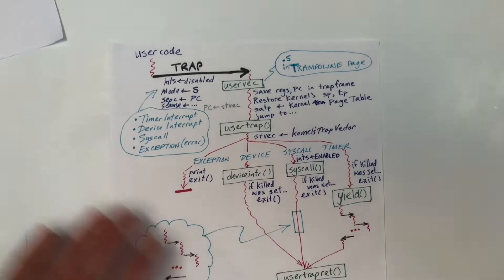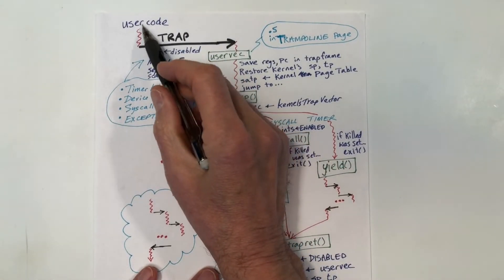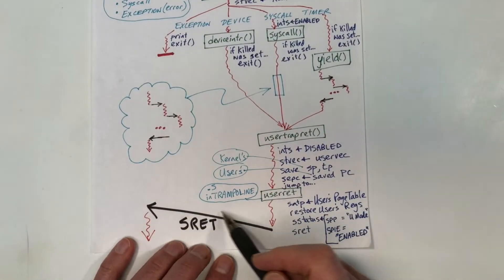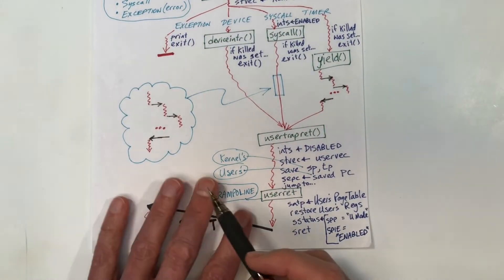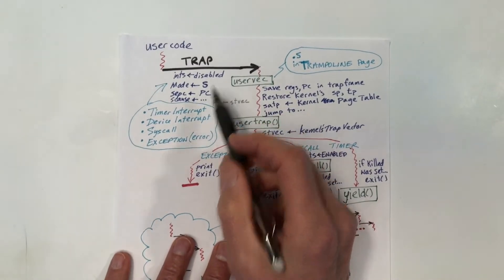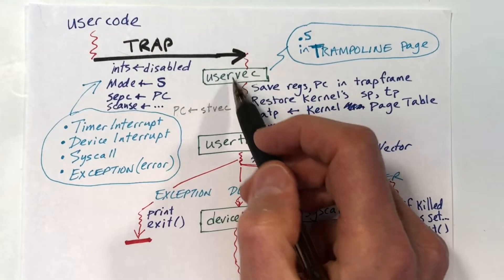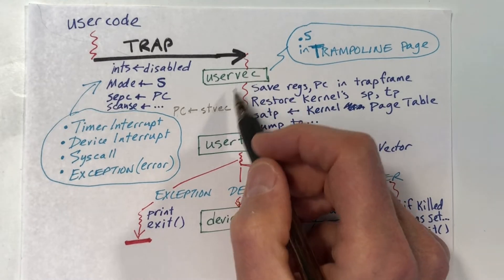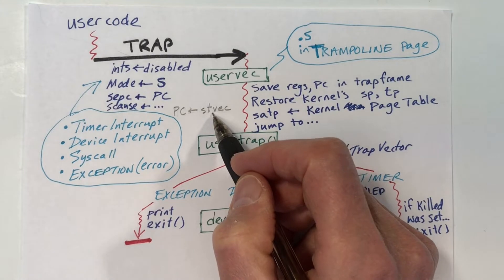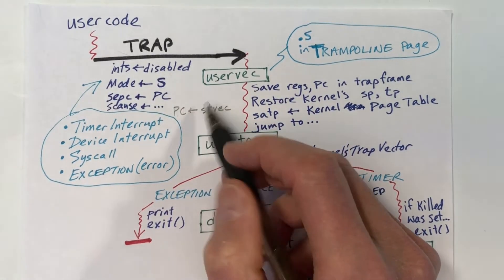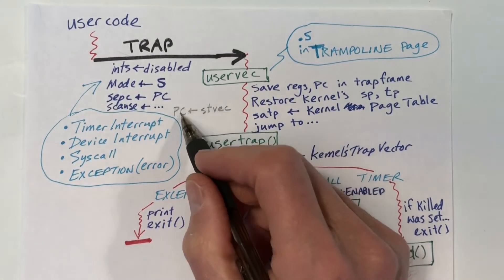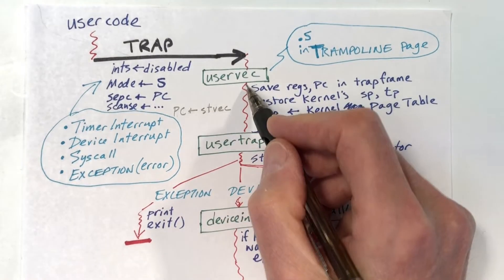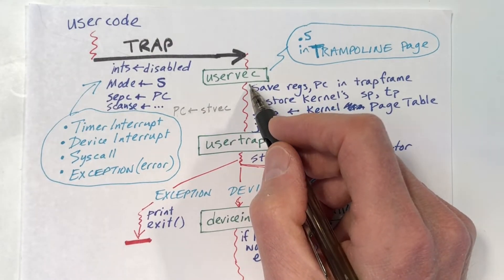Let's review this picture I've shown earlier, where we have code executing in user mode and then a trap occurs, and we ultimately execute an SRET and return to user mode. When the trap occurs, the hardware will take an immediate jump to uservec. There's a special register called STVEC, and as part of the hardware processing, the value in that register will be moved into the program counter. This register contains the address of the first instruction of uservec, so this just does a jump to uservec.